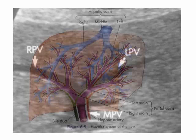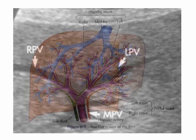Each branch of the portal vein goes together with a branch of the hepatic artery and a branch of the bile duct to every microscopic part of the liver. In these microscopic parts, the liver cleans the blood and performs many chemical functions. After this process, the blood leaves the liver through the right, middle, and left hepatic veins that finish in the IVC.